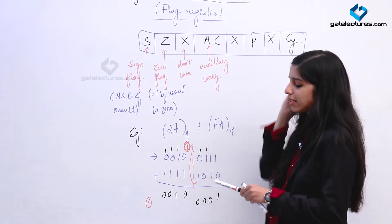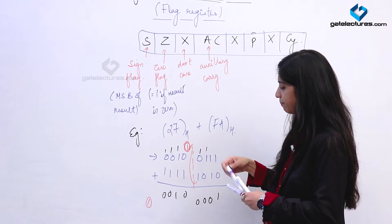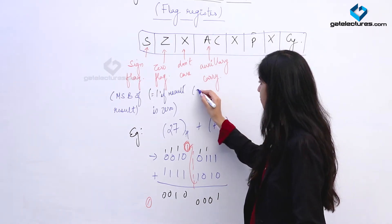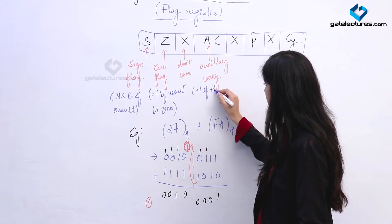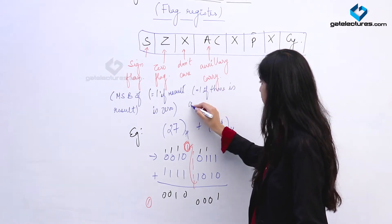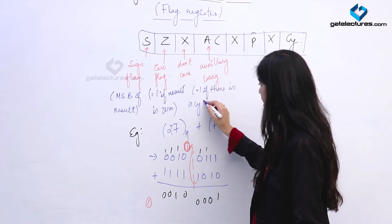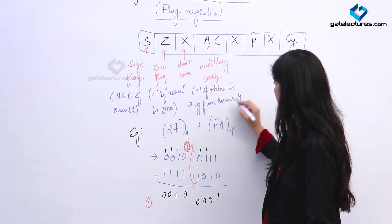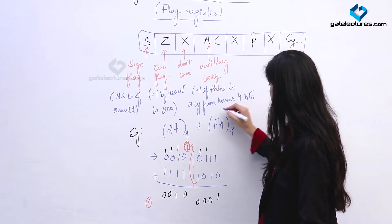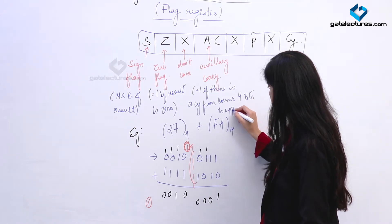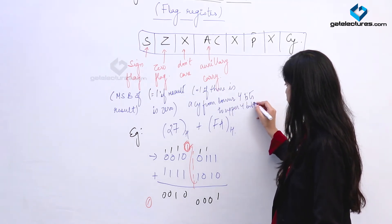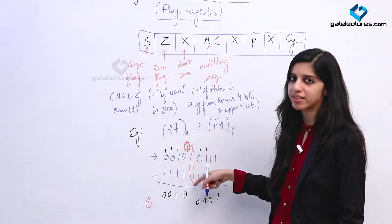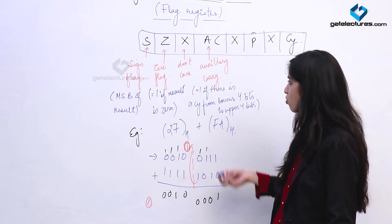The Auxiliary Carry flag is going to be 1 if there is a carry from the lower 4 bits to the upper 4 bits. In this case, since that carry occurred, the Auxiliary Carry flag is set to 1.